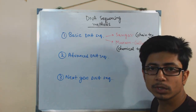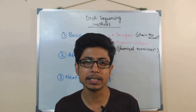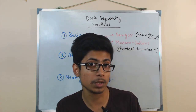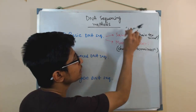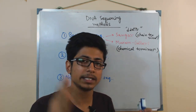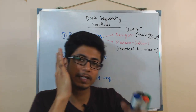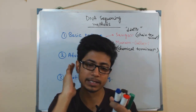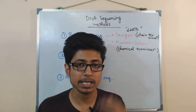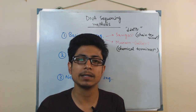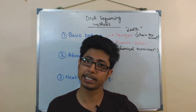In Sanger sequencing, we set up four different experimental setups. We add the desired nucleotides along with special dideoxy nucleotides (ddNTPs). These ddNTPs have a special feature: they terminate the DNA elongation process. For example, if we add ddGTP, it terminates wherever it finds a G; if we add ddATP, it terminates at an A. This way we can determine exactly where each base is placed.